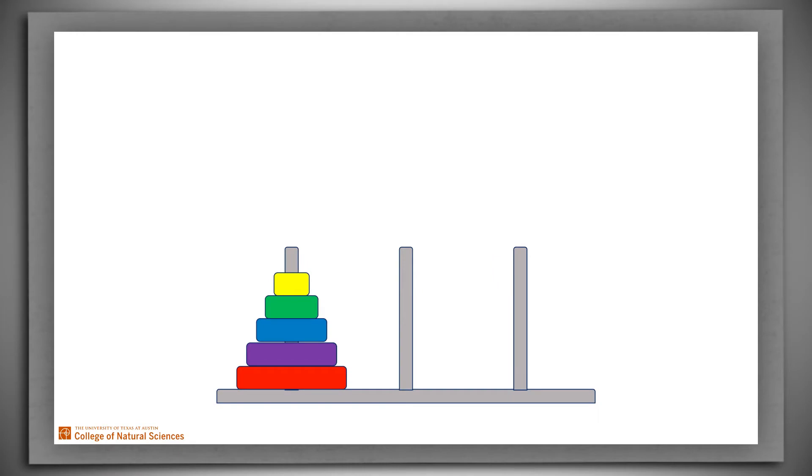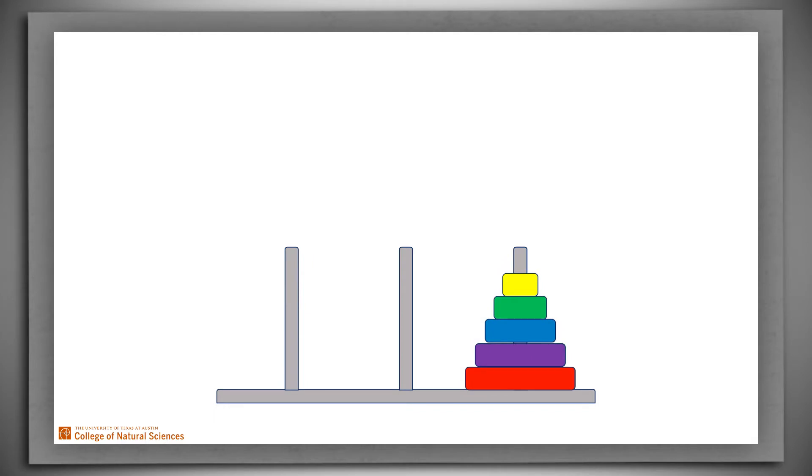Suppose that we have a Towers of Hanoi problem of size N, by which we mean that there are N disks that have to be moved from one pole to another. In this example, N is 5. What should we do?